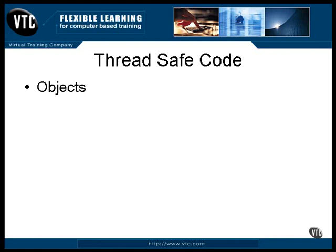A servlet is stored on the server as a class file, and it's made into an object whenever a user requests that it be executed. A JSP page has the same basic construction — it's compiled into a class file the first time a user requests it, and then it's made into an object so it can be executed. As long as two or more users can execute the same class file at the same time without getting stuff intertwined, it's thread-safe.